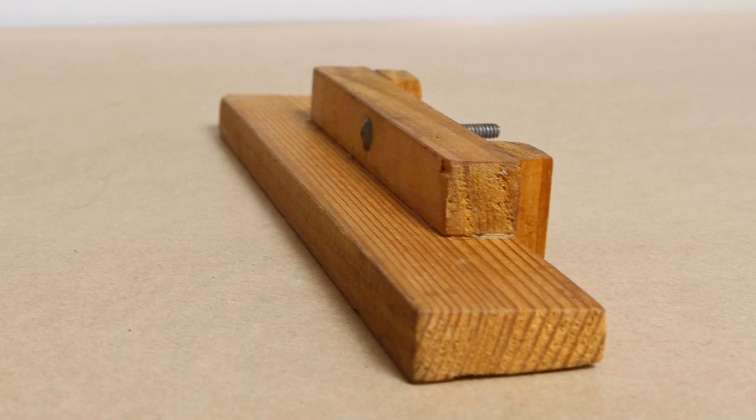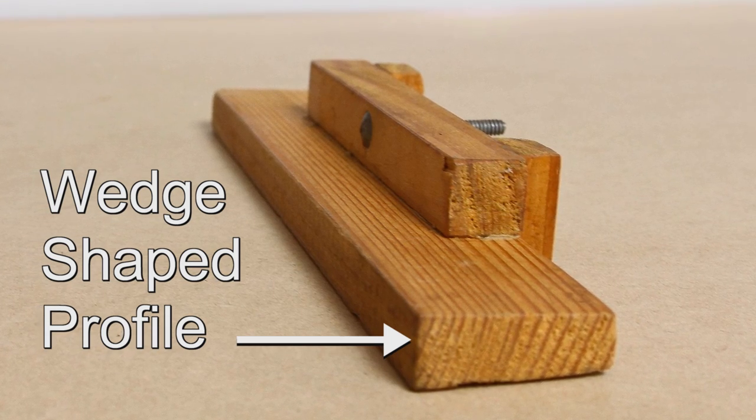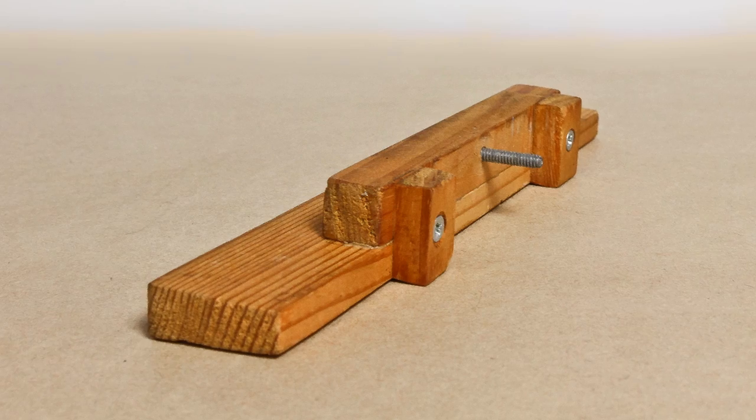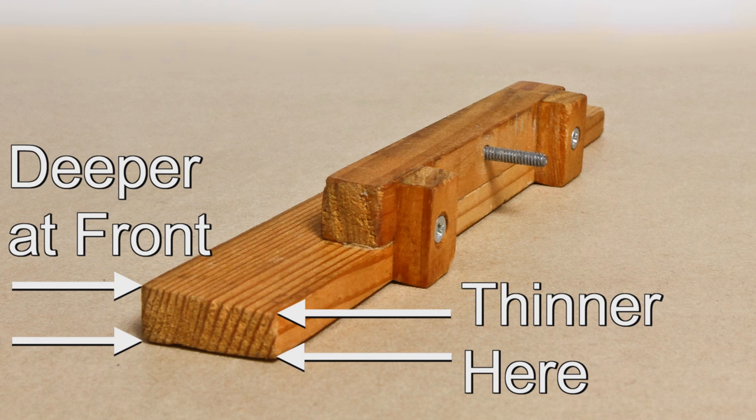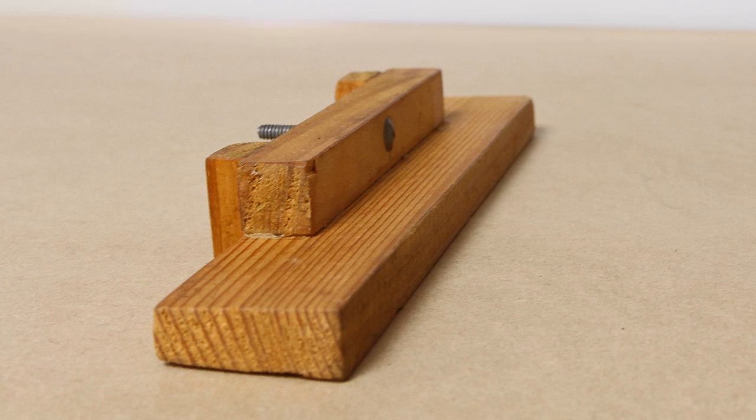You can see here in the side view that the shelf is tapered at the back so it has a wedge-shaped end profile. This stops the boards from moving forward and falling off.